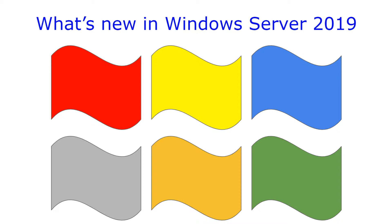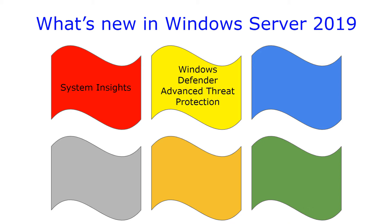So what is new in Windows Server 2019? To start, System Insights, which brings local predictive analytics capabilities to Windows Server. This is all part of the AI machine learning thing that you're probably hearing about — it's kind of the buzzword right now. Next is Windows Defender Advanced Threat Protection. Windows Defender's been around for a while, but with Server 2019 it has more added to it, like reducing the attack surface, protecting endpoint networks, protecting folders from ransomware, and even more protection.